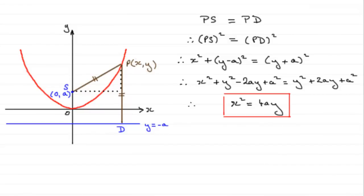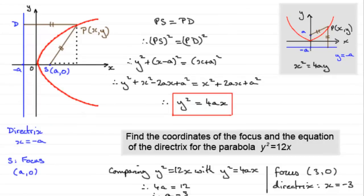In summary, we've covered the basics behind the equation of a parabola: the two types you can get — one symmetrical about the x-axis and one symmetrical about the y-axis — and the definitions of directrix and focus. There will be further videos looking at more properties of the parabola, including equations of tangents, normals, and the parametric form of the equation of a parabola.